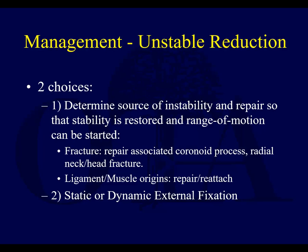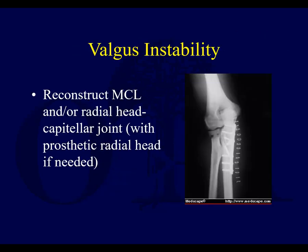A relatively thin, compliant patient who is not intubated in the ICU will probably be fine in a splint. Similar to knee dislocations, if you have valgus instability you can reconstruct the MCL — not the most satisfying procedure, but it can be done. Addressing the radial head certainly helps as well.